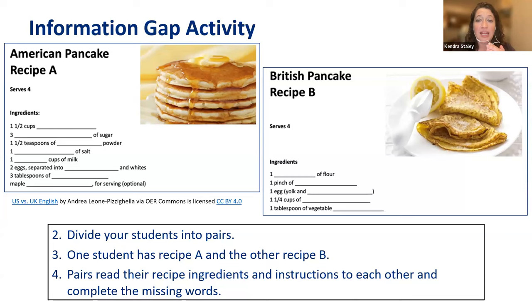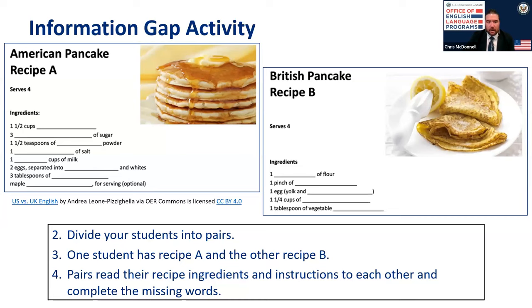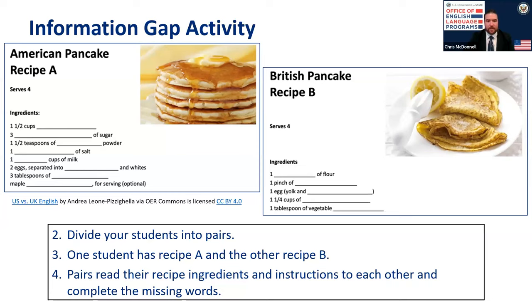So now Chris and I will demonstrate this activity, the information gap activity. I have the American pancake recipe A on the left, which includes information gaps — some missing information. Chris has the American pancake recipe B, which is the master version with the full ingredient list. He'll read his recipe ingredients and I'll fill in my blanks. Then we'll switch and do the same thing with the British pancake recipe. Chris says: I need to fill in the gap — one and a half cups of flour. Then I'll write flour in my recipe. The next one: three tablespoons of sugar. So I'll write tablespoons in my recipe. We'll continue this activity until both of us have completed our recipes.